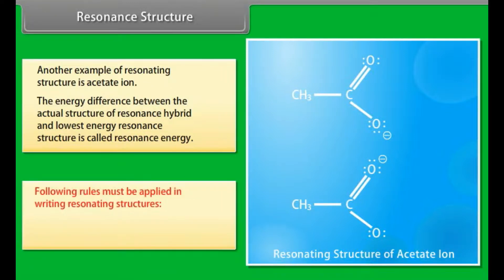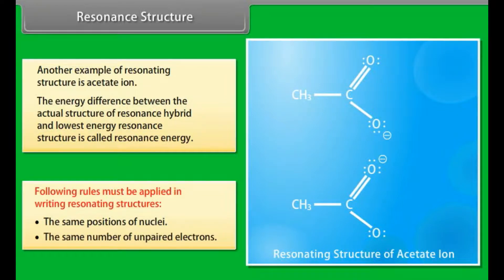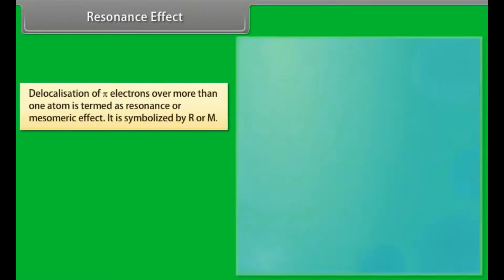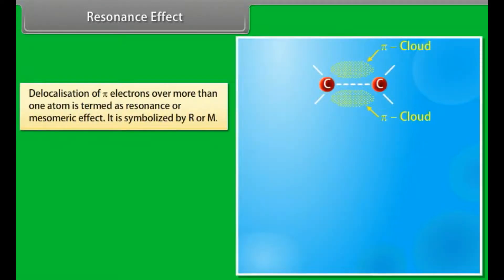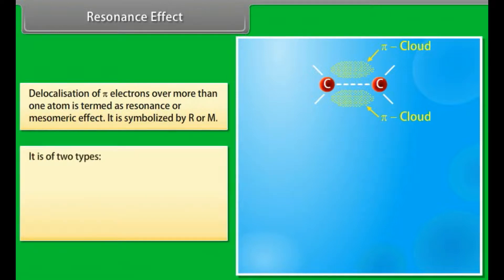Rules for writing resonating structures require the same positions of nuclei and the same number of unpaired electrons. Resonance effect: delocalization of pi-electrons over more than one atom is termed the resonance or mesomeric effect. It is symbolized by capital R or capital M and is of two types.